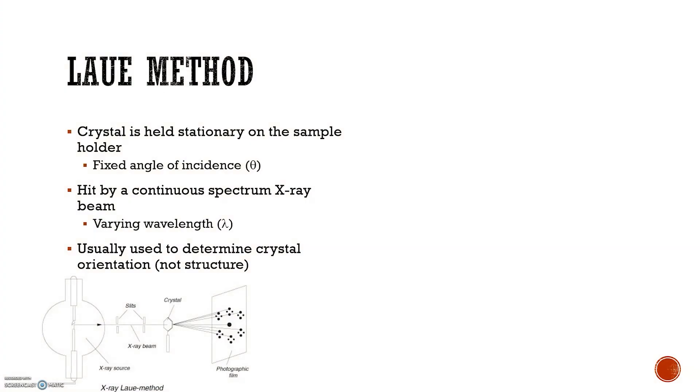In the Lau method, the crystal is held stationary on the sample holder, therefore there is a fixed angle of incidence. The sample is hit by a continuous spectrum X-ray beam, therefore the wavelength varies. This is usually used to determine crystal orientation, not the crystal structure.